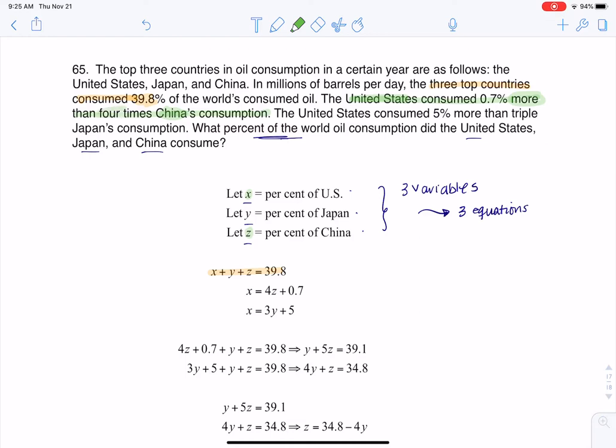When I see the word more over here, I'm going to think of addition. When I think of four times, I'm going to think of multiplication. So as we take a look at this, we have the U.S. consumption was 0.7% more than four times China's consumption. So that's where my second equation is coming from.